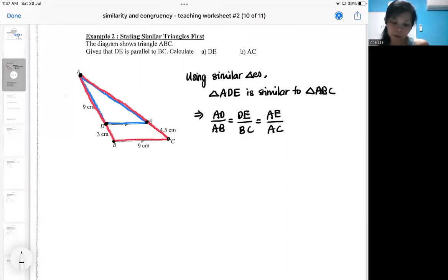And our job is to calculate DE and AC. And we'll try to fill in the values. So this is a nine and AB is a 12. I do not have DE. I do have my BC. So don't have my AE. Do I have my AE? No, I don't have.